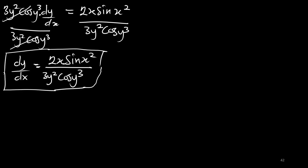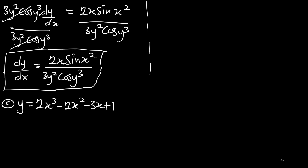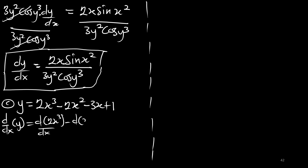Now the third part is also very simple. We have y equal to 2x cubed minus 2x squared minus 3x plus 1, and we need to find the derivative. We simply apply d/dx to the right-hand side, giving dy/dx equal to d/dx of 2x cubed minus d/dx of 2x squared minus d/dx of 3x plus d/dx of 1.